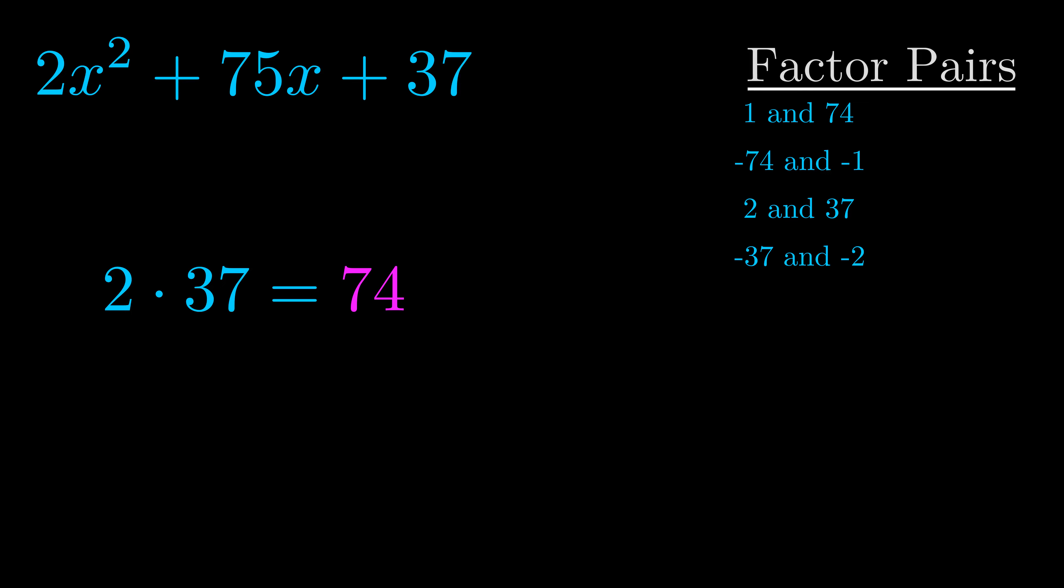The b value is the coefficient on the x term. That's the middle term, the one that we haven't done anything with yet. And really this is the only factor pair that we need.